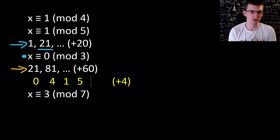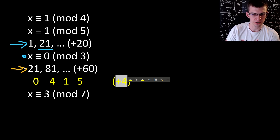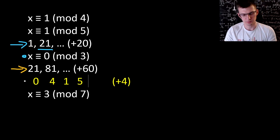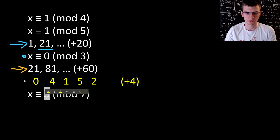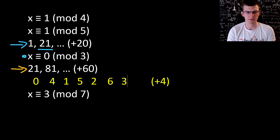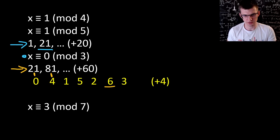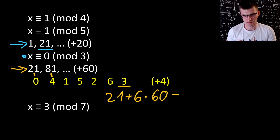So the remainders modulo 7 are: 0, then 0 plus 4 is 4, then 4 plus 4 modulo 7 is 1, then 1 plus 4 is 5. Next: 5 plus 4 is 9, modulo 7 is 2. I'm looking for the first value equal to 3 modulo 7. 2 plus 4 is 6, then 6 plus 4 is 10, modulo 7 is 3. Done. 0 represented 21, 4 represented 81, then 21 plus twice 60, three times, four times, five times, six times — this is 21 plus 6 times 60, which is 21 plus 360, so in total 381. That's the solution.